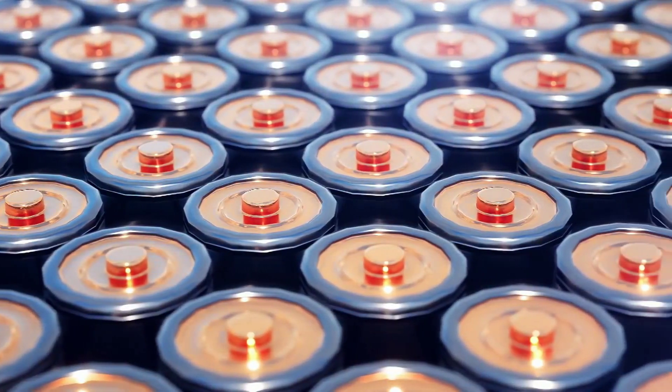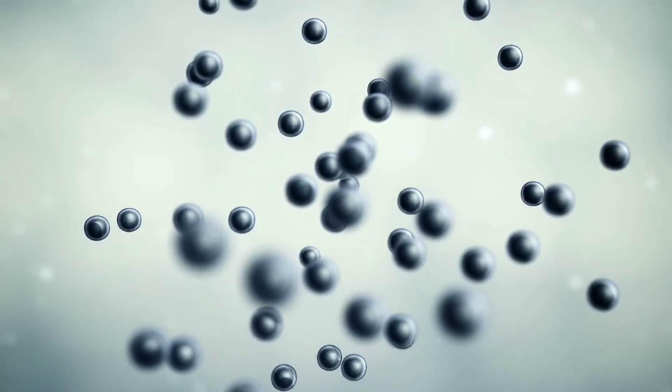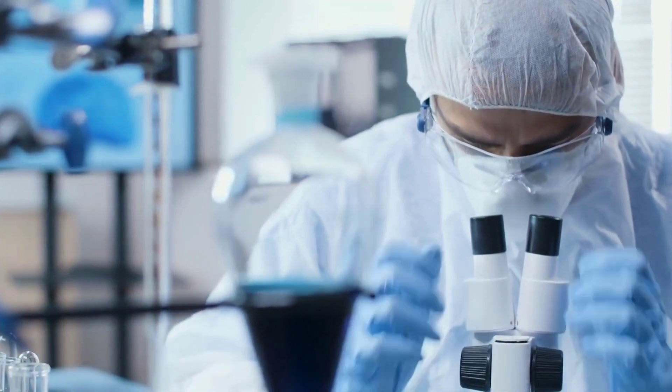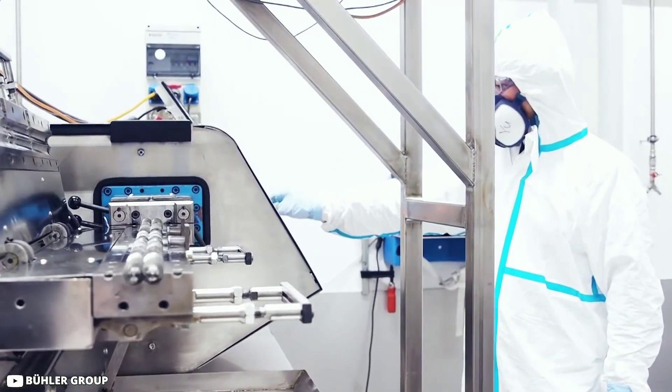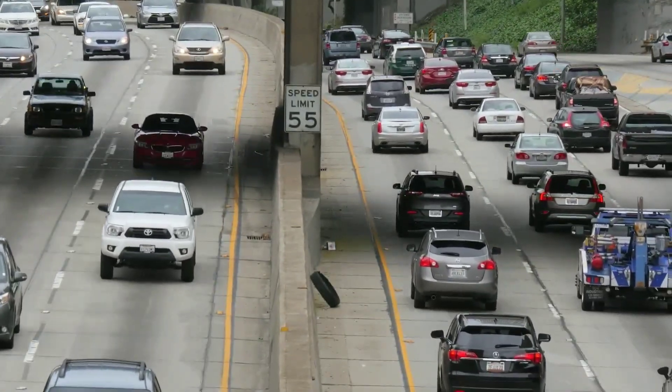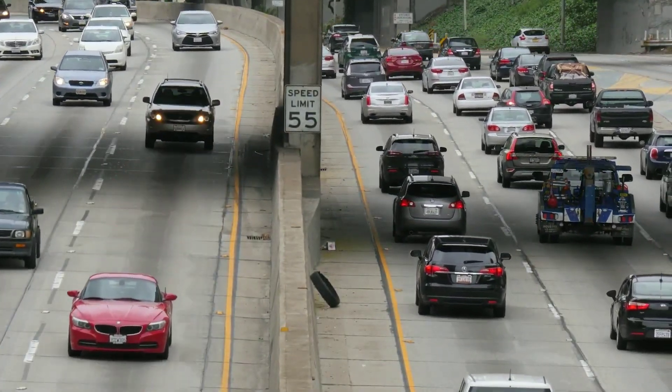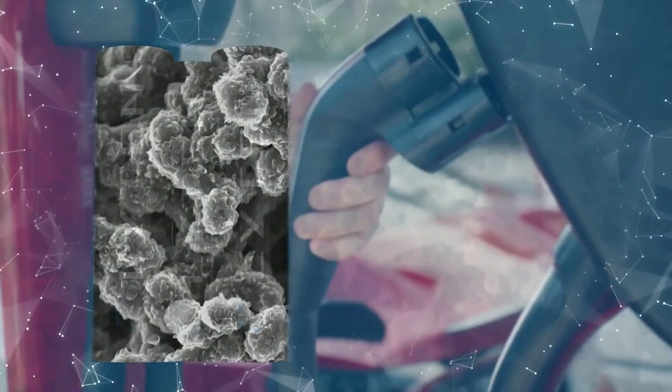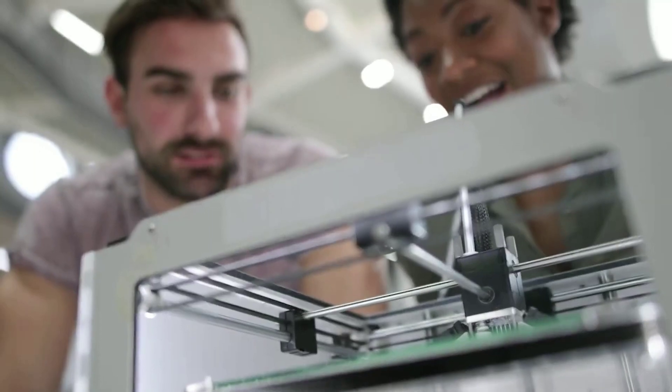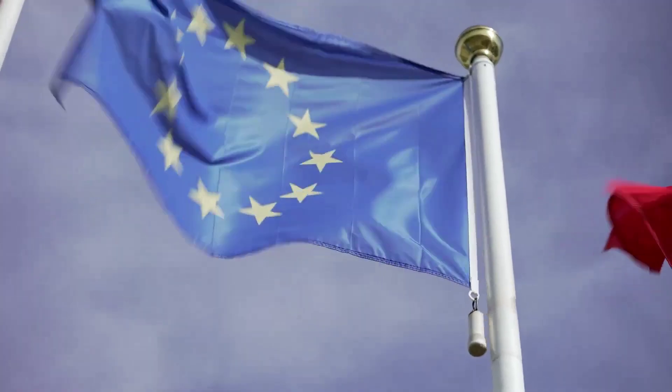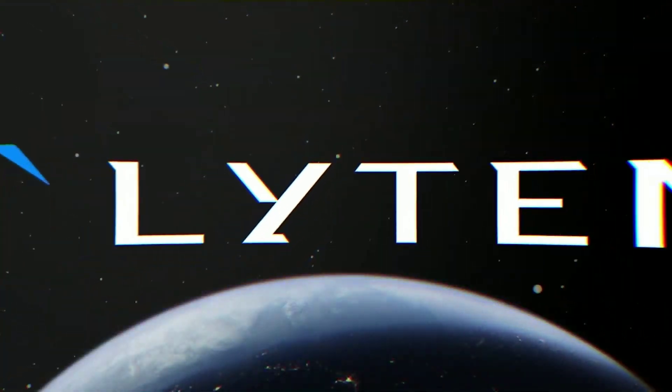3D graphene is a novel material that Leighton has developed using a proprietary process that converts methane gas into a tunable three-dimensional network of carbon atoms. Methane is a greenhouse gas that is abundant and cheap and can be sourced from renewable sources like biogas or landfill gas. By converting methane into 3D graphene, Leighton not only creates a valuable product but also reduces greenhouse gas emissions and contributes to the fight against climate change.